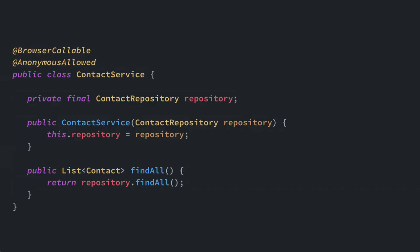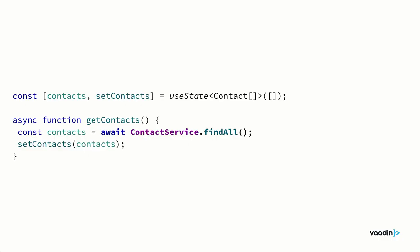What's special is that you can call Java methods from TypeScript with the same method signature. If you have a Java class with `@BrowserCallable`, you can call the `findAll` method in TypeScript with the same signature — the only difference is it becomes asynchronous since we're going over the network. It retains all type information, so if you change your backend code you'll get compile-time errors in your React code.